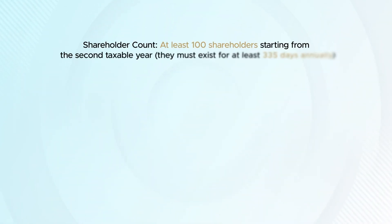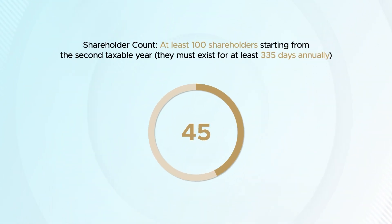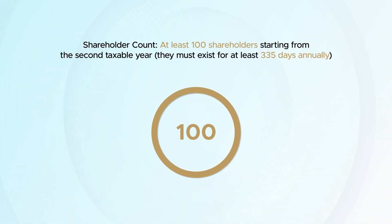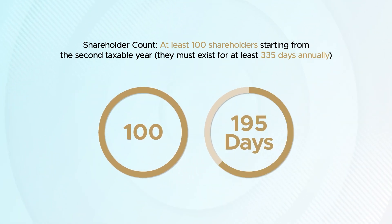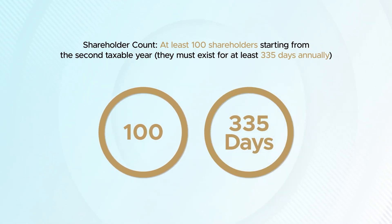Shareholder Count. There must be at least 100 shareholders starting from the second taxable year, and they must exist for at least 335 days annually.